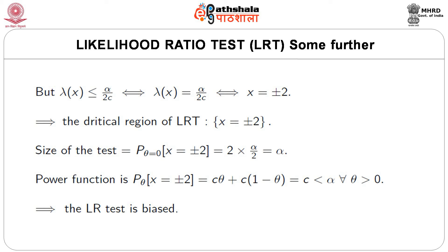Regarding the size of the test, P(X = ±2 | theta=0) = 2*(alpha/2) = alpha. So the size of the test is alpha. Now the power function of the test is P_theta(X = ±2) = c*theta + c*(1-theta) = c for all theta > 0. But it is given that c < alpha, so the power function equals c, which is less than alpha.